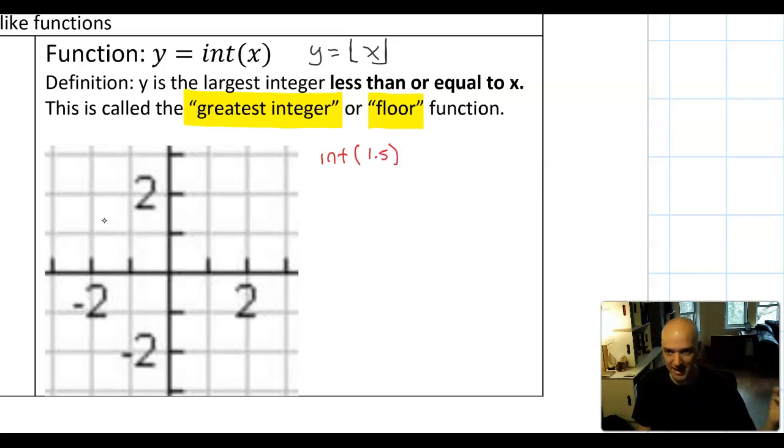So for example, int of 1.5, well, the largest integer less than 1.5 is 1. Same with like int of 1.8 is also 1. Int of 2, however, the largest integer less than or equal to 2 is 2, etc.